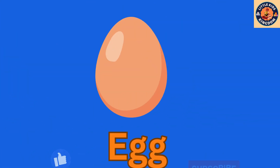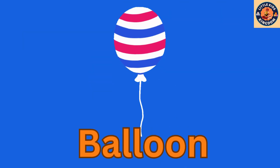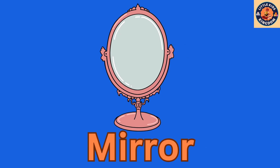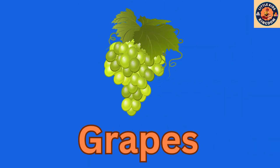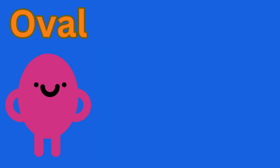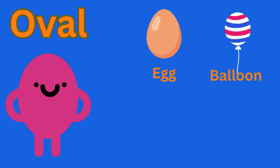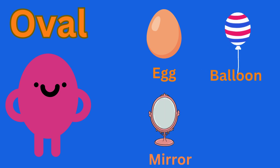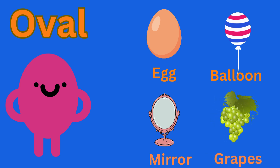Oval. I am an oval. Egg — oval. Balloon — oval. Mirror — oval. Grapes — oval.